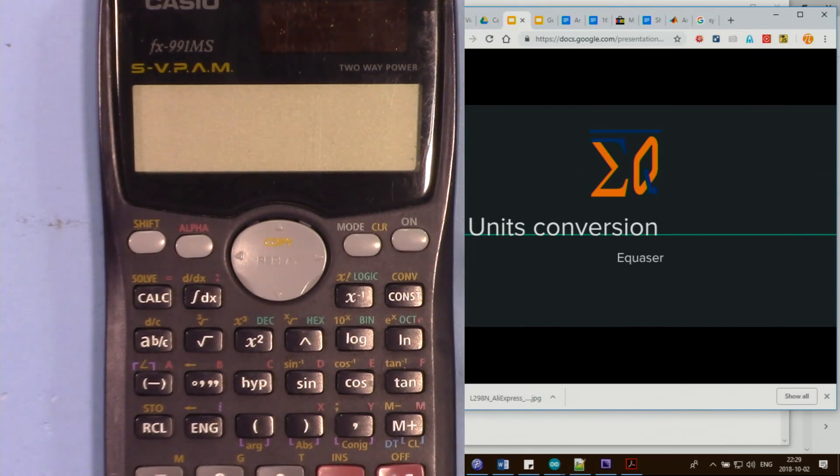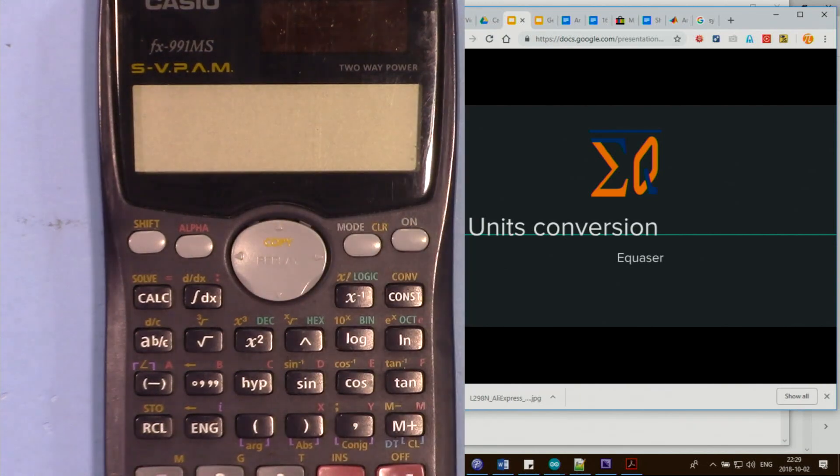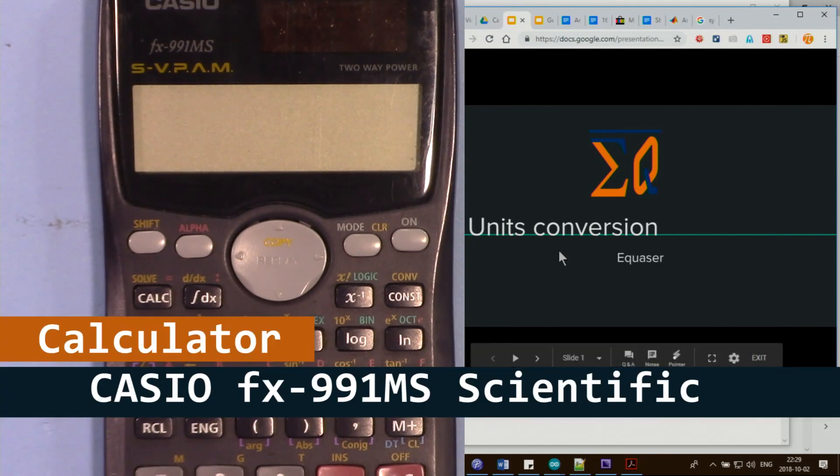Hi, welcome to a calculator tutorial by Equasar. In this video we are going to see how we can use this Casio FX-991MS scientific calculator to do unit conversions.